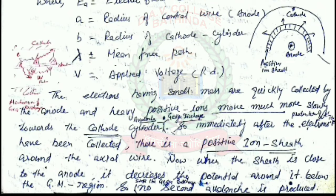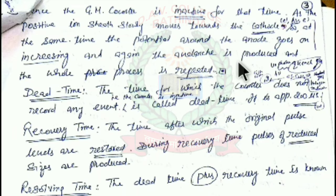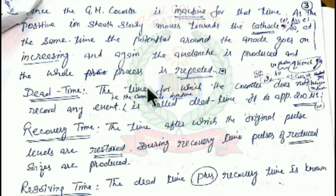When the sheath is close to the anode, it decreases the potential around the anode below the GM operating region — the sheath acts as a tight covering of positive charge. Because the sheath carries positive potential, the anode potential decreases, so no second avalanche is produced and the GM counter is inactive during this time. As the positive ion sheath moves away from the anode toward the cathode, the potential around the anode recovers and a new avalanche is produced, repeating the whole process.